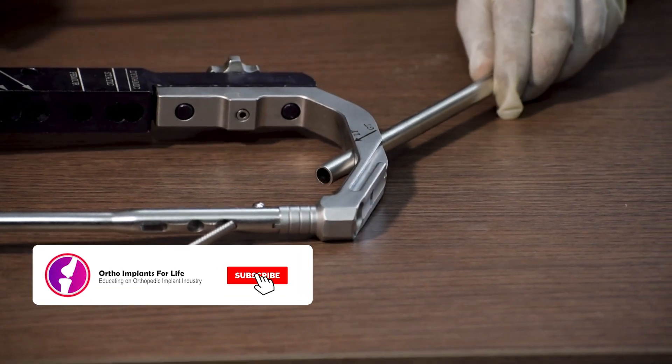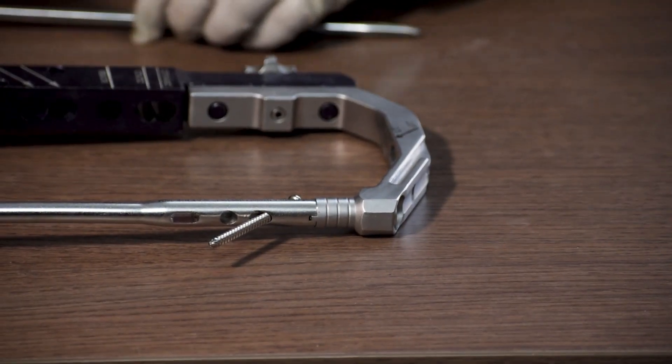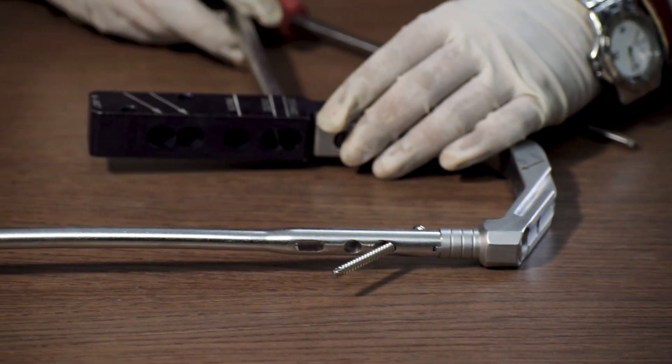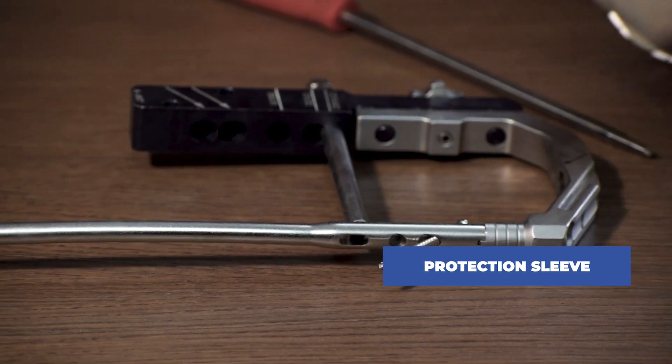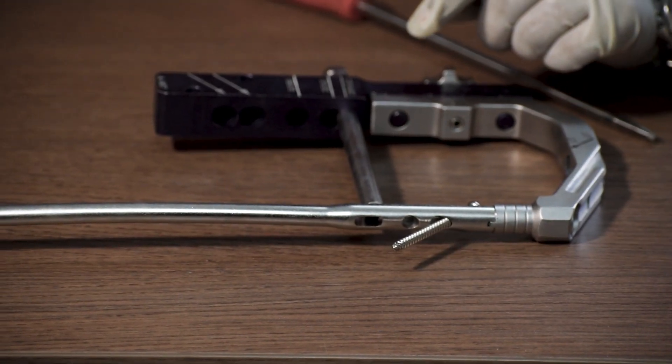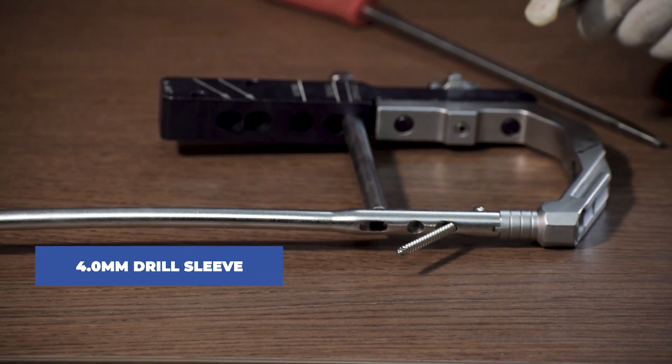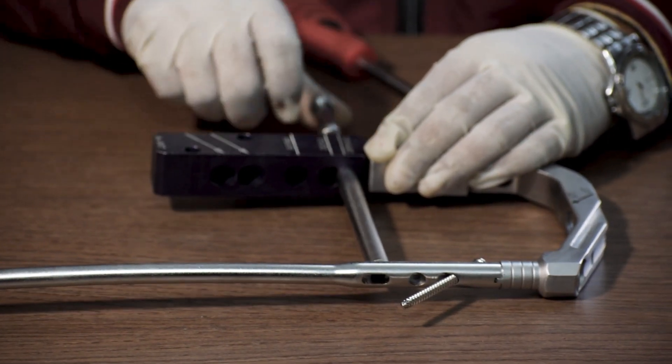After this, there is another option where we make either a static lock or a dynamic lock in the nail. Again, we use the same procedure. First fixing a protection sleeve and passing it through the hole of the jig. For a dynamic lock, it passes through the dynamic hole of the jig and for a static lock, it will pass through the static hole. Then we pass a 4mm drill sleeve through the protection sleeve.